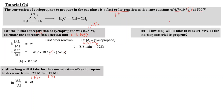K is still the same as given. Substituting in: ln(0.25/0.15) equals 6.7 times 10 to the power of negative 4 per second multiplied by T. Once we do the math, T equals 760 seconds. You can also convert it into minutes by dividing by 60 to get the answer in minutes — either unit is acceptable.